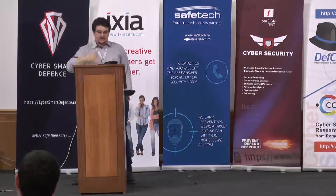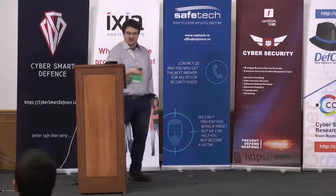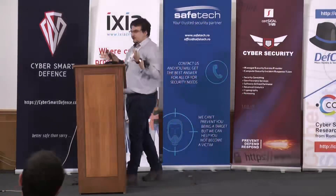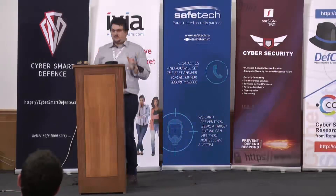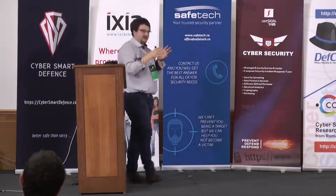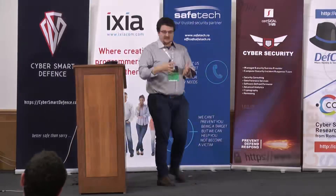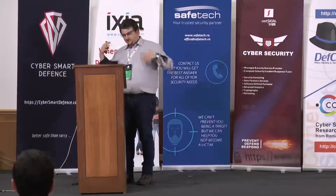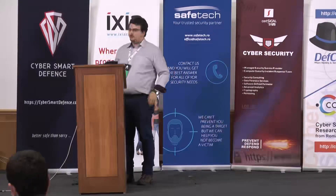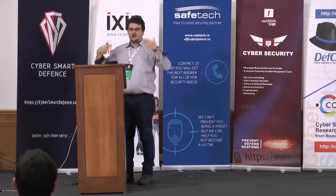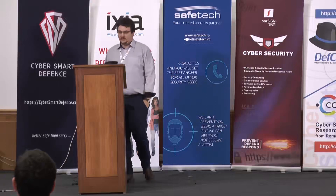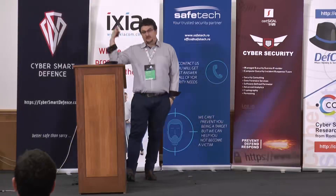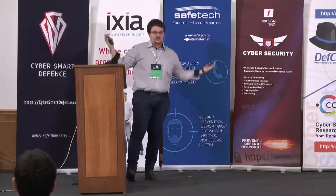Protocol violation: in order to provide protection to a protocol like SMB or MSRPC or SunRPC, you need to have the IDS understand that protocol — it needs to know about it. That requires more compute power and more resources to do that, and that usually doesn't happen. So you can just go ahead and attack SMB.